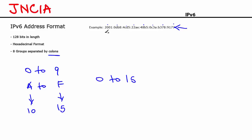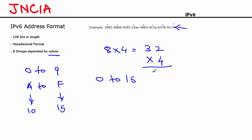Every character that you see here can be represented by 4 binary bits. So you have a total of 8 groups. Every group has 4 characters, which means 8 into 4 is 32 characters. Every character can be represented by 4 binary bits, so 32 times 4 is 128. 128 bits is the length of an IPv6 address.